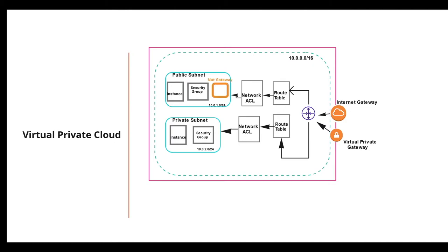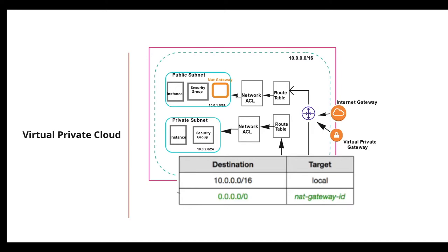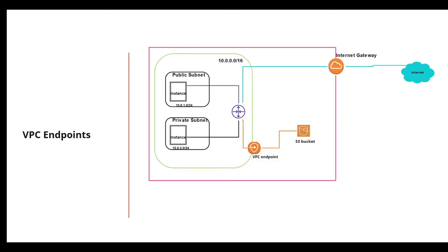Traffic from the internet passes through the internet gateway, hits the route table, and through the network ACLs reaches the resources within the subnets. NAT gateway or NAT instances are used to allow resources in a private subnet to access the internet. For example, if you want your database to reach the internet for patching, you can use a NAT instance or NAT gateway defined in the public subnet to allow communication for private subnet instances.